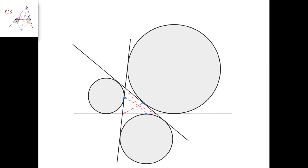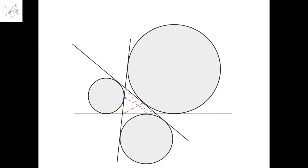We have a triangle, and the three excircles are drawn. They touch each of the sides here, here, and here respectively, and we have to prove that this line, this line, and this line intersect at one point.